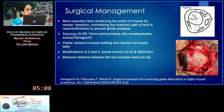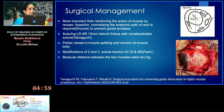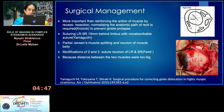Coming to surgical management, more important than reinforcing muscle action by recession-resection is normalizing the anatomic path of the recti to prevent globe prolapse. Suturing of the lateral rectus to the superior rectus 15 millimeters behind the limbus with non-absorbable suture was suggested, which gave good results.